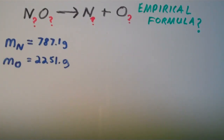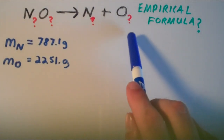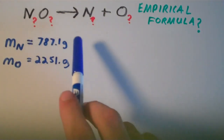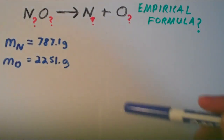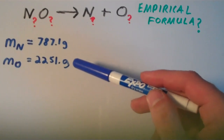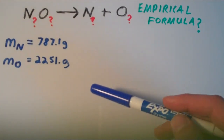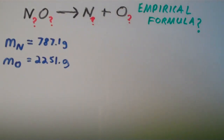This problem says we have a compound that is composed of nitrogen and oxygen, and that this compound was decomposed into its constituent elements. The masses of nitrogen and oxygen were measured after full decomposition. The mass of nitrogen turned out to be 787.1 grams and the mass of oxygen ended up being 2251 grams. We're going to find the empirical formula of this compound.